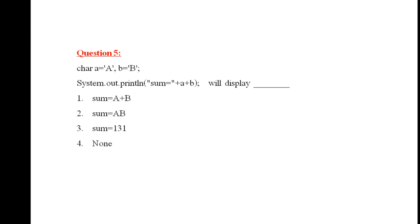Question 5 is the same as Question 4 but the round bracket is missing in the print statement — you are printing the message followed by a + b without parentheses. Without parentheses, whatever data you print after a string constant is concatenated. So 'sum = ' is a string constant, and beside that you print 'A' and then 'B'. The right answer is: sum = AB.